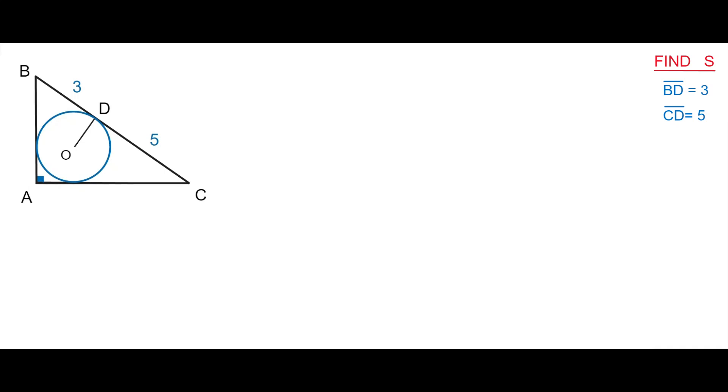Welcome to Geometry Masterclass. In this video we have a right triangle and inscribed circle that divides the hypotenuse at a point of tangency into two segments with the lengths 3 and 5. The task is to find the area of a right triangle.